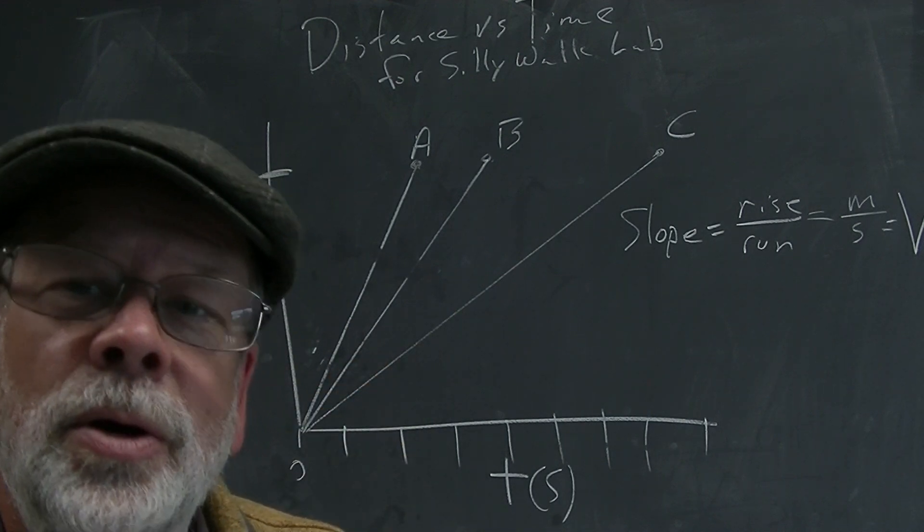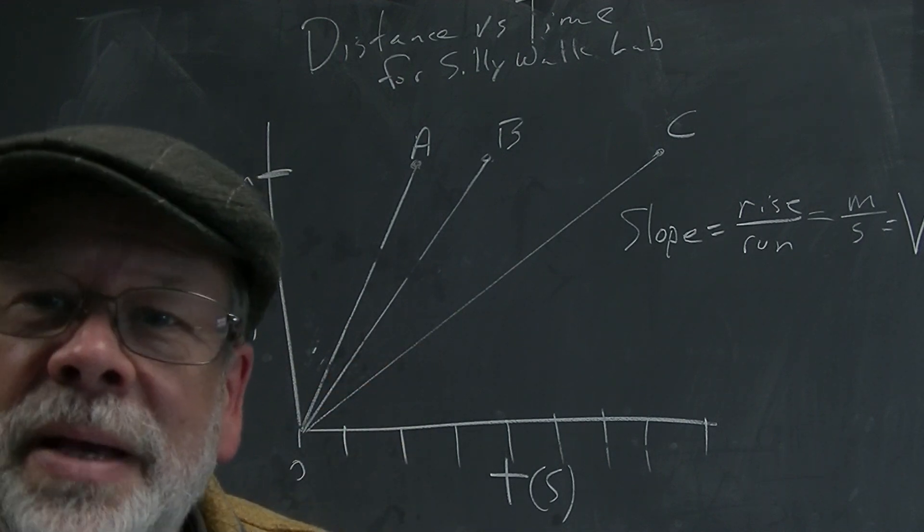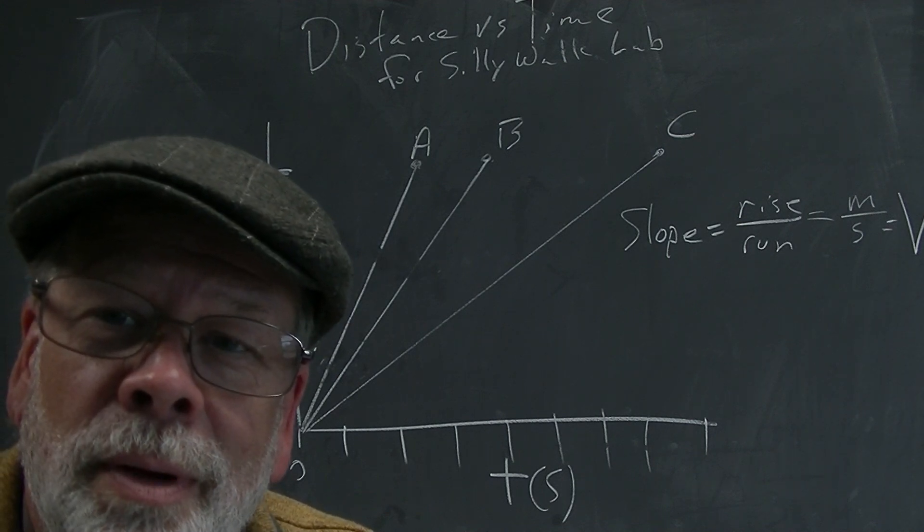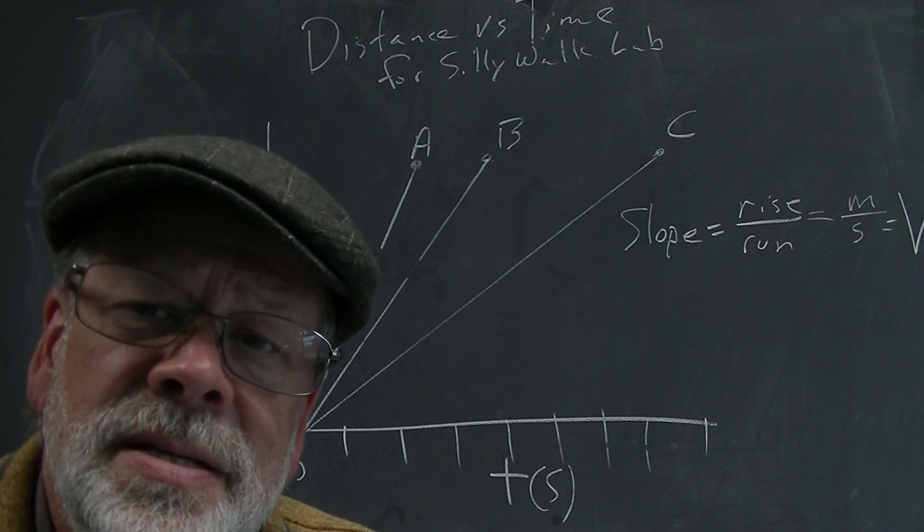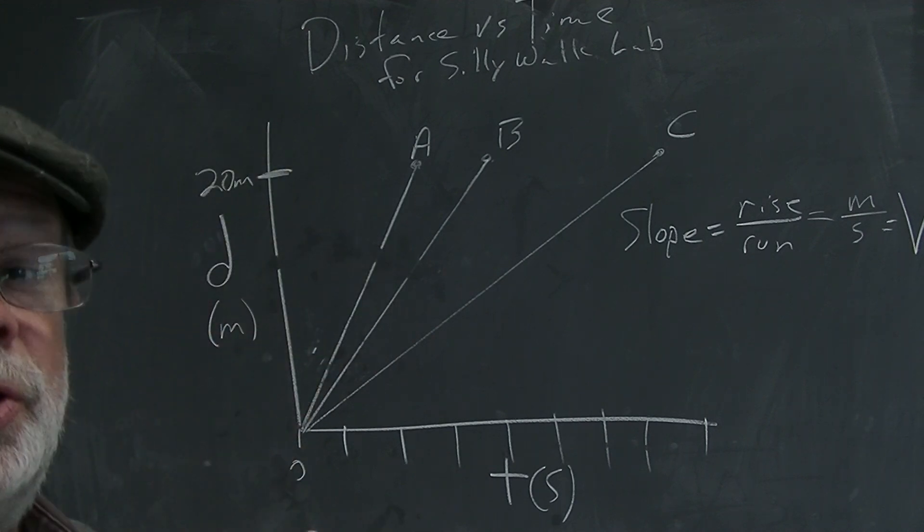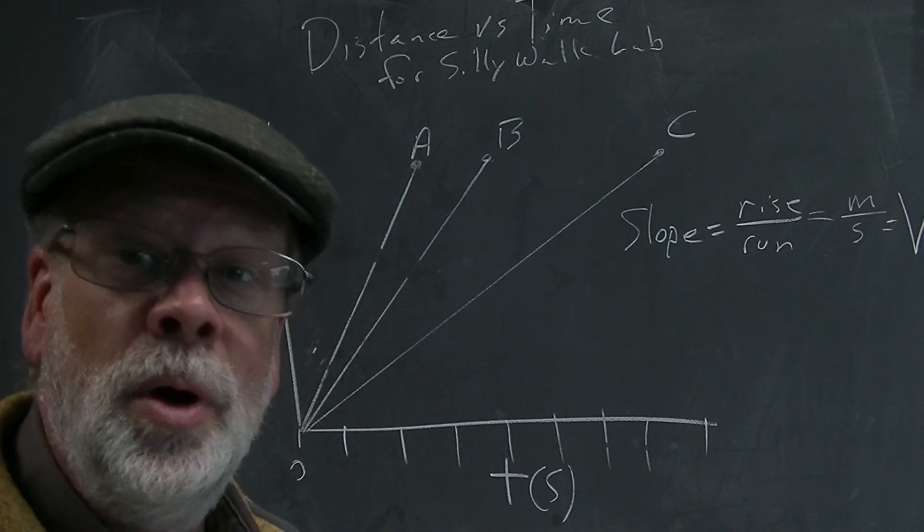the slope is equal to the velocity. Now when you look at it, who's the fastest? Biggest slope. Biggest slope. Who's the slowest? Smallest slope. Can you see how quick and easy it is to figure that out? When you're looking at distance time graphs, they speak to you if you know what the slope is.